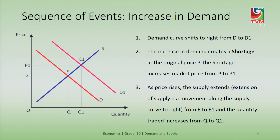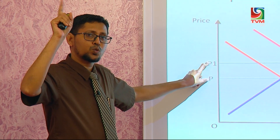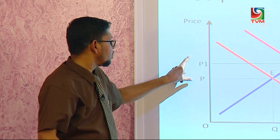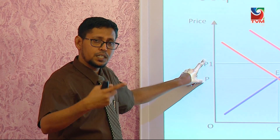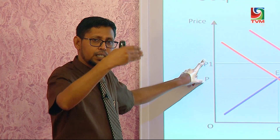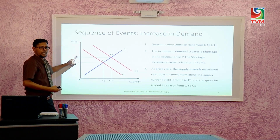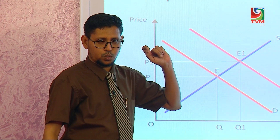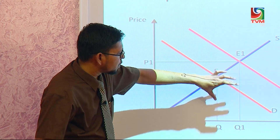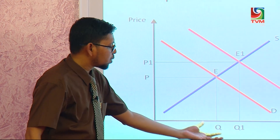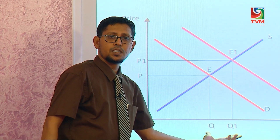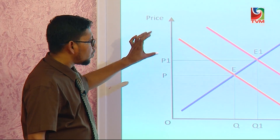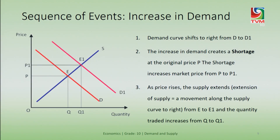When the price increases, recall what happens to the supply: the price increase causes the supply to extend. There is an extension of supply which occurs because of that. When this extension occurs, more quantity is traded — people buy more quantity. These are the sequence of events.